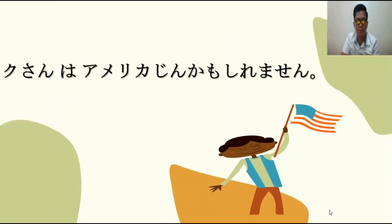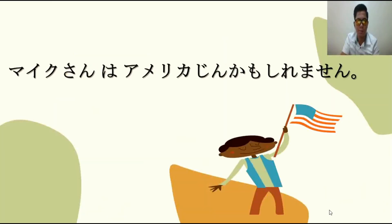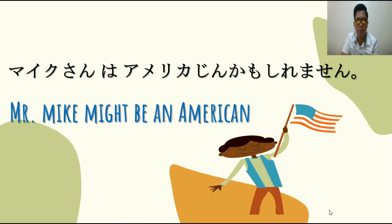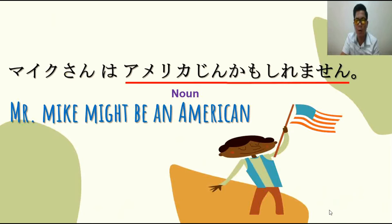Next sample: Mike-san wa Amerikajin kamo shirimasen. Means, Mr. Mike might be an American. Dito, noun naman yung ginamit natin, which is Amerikajin. Then plus Kamo Shirimasen. Ibig sabihin, might be an American.